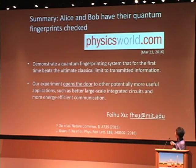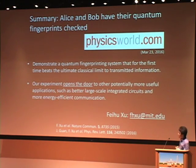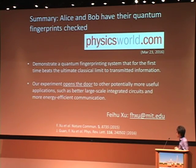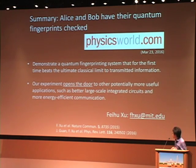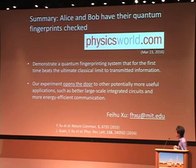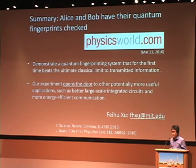In summary — as titled by an article in Physics World: 'Alice and Bob have their quantum fingerprints checked' — we demonstrate for the first time a quantum fingerprinting system that beats the classical limit. Our experiment opens the door to other potentially useful applications, such as large-scale integrated circuits and energy-efficient communication.